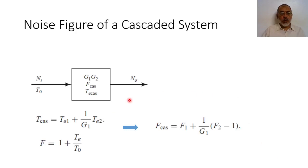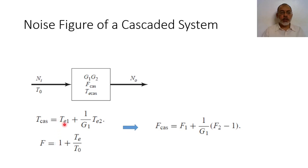Now that we have the equivalent noise temperature for the cascaded system, we can obtain the noise figure. The noise figure in terms of the equivalent noise temperature is given by F = 1 + Te/T0. Here, Te is the cascaded noise temperature T_cascaded. This means the noise figure equals 1 + TE1/T0 + (1/G1)·TE2/T0.